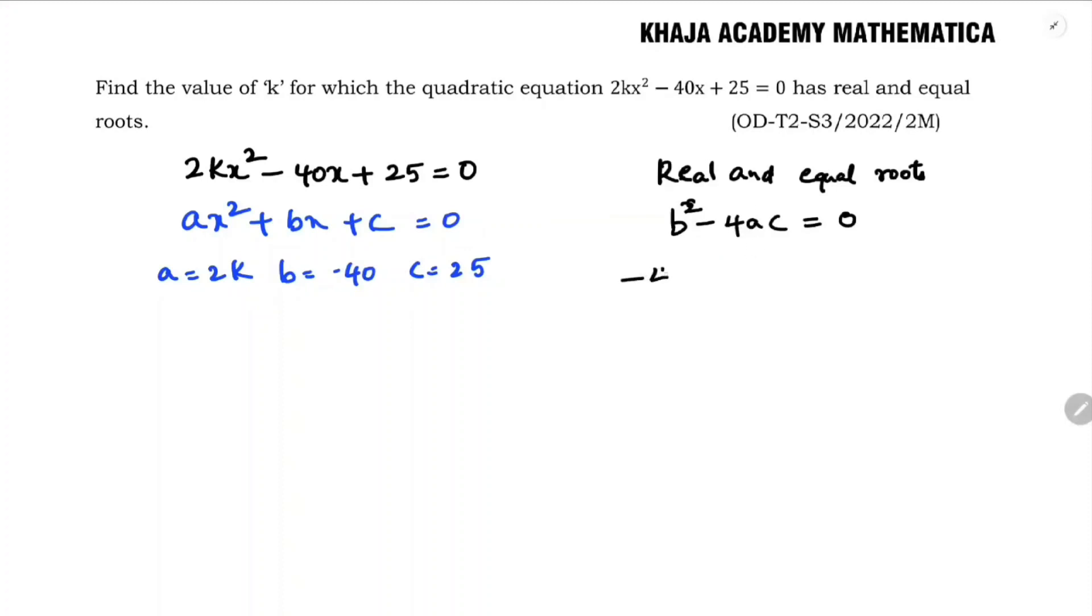b is (-40)² - 4, a is 2k, c is 25 equals 0. So 40² is 1600,